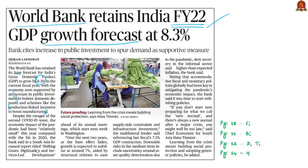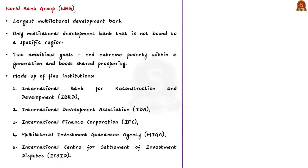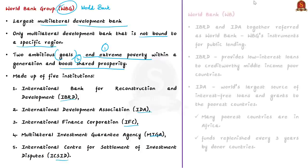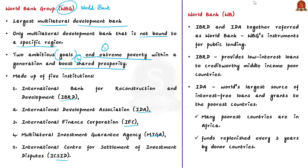In this context, let us see about the World Bank. First of all, know that World Bank is a part of the World Bank Group. This World Bank Group is the largest multilateral development bank and the only multilateral development bank that is not bound to a specific region. The World Bank Group is made up of five institutions: the International Bank for Reconstruction and Development, the International Development Association, the International Finance Corporation, the Multilateral Investment Guarantee Agency, and the International Center for Settlement of Investment Disputes.